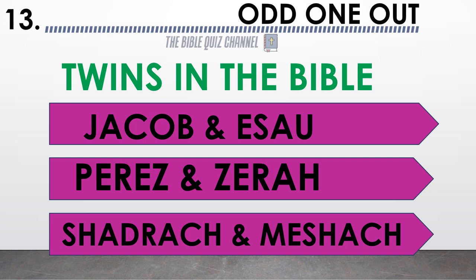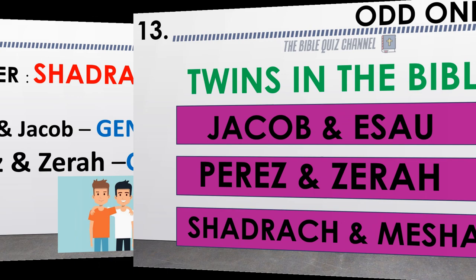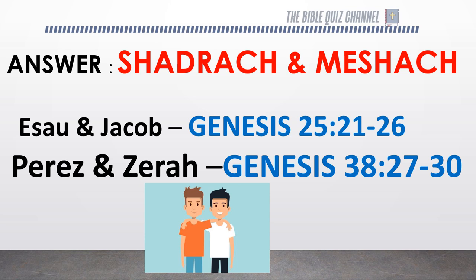Odd one out — twins in the Bible: Jacob and Esau, Perez and Zerah, Shadrach and Meshach. The correct answer is Shadrach and Meshach — they were not twins.